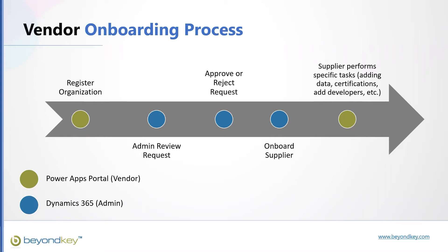At the beginning, a vendor registers their organization — they just put their information in, very simple. At that point, the admin will review the request. For example, John from ABC Company with phone number 123-456-789 wants to join — will you approve or reject that? You say yes or no, and then they move on and you start the onboarding process.